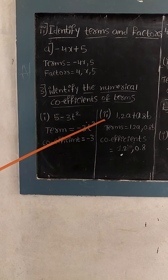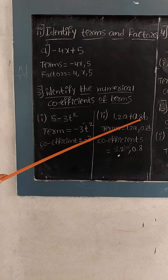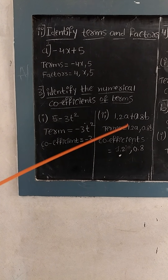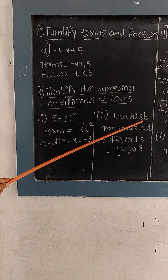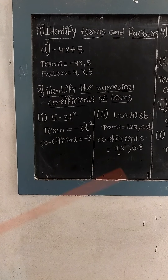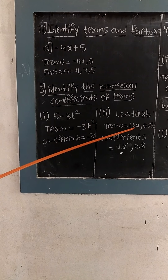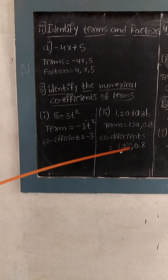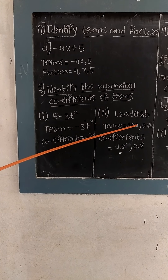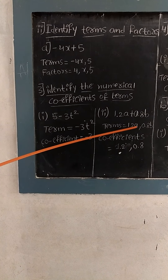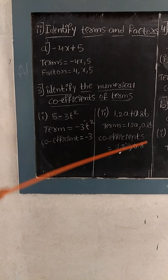The second question is 1.2a plus 0.8b. The terms of this expression are 1.2a and 0.8b. For the coefficients: in 1.2a the coefficient of a is 1.2 — the variable a itself is not the coefficient. Therefore the coefficient of a is 1.2 and the coefficient of b is 0.8.